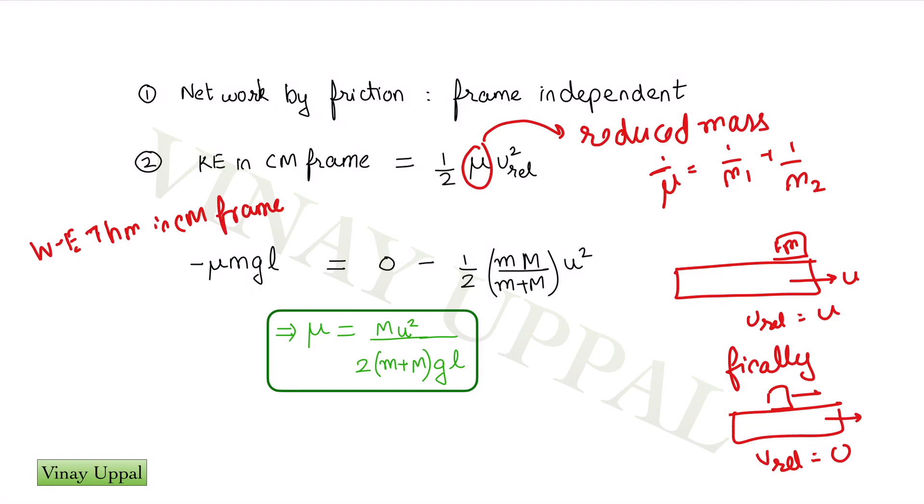So I know that the block travels a distance L in the frame of the plank. So work done by friction in the frame of the plank is going to be minus mu mg into L, friction into distance. But that is also going to be the work done by friction in the center of mass frame.